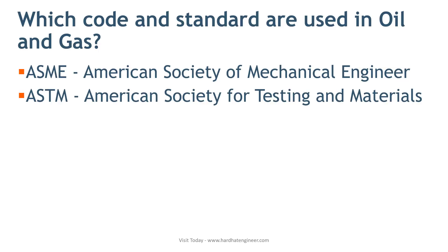ASME has published a total of 15 sections. Out of these, only Section 1, Section 2, and Section 3 are used very frequently in the process industry. Within these sections, there are different volumes that cover various materials. For example, Section 1 has 8 volumes, Section 2 has 5 volumes, and Section 3 has 6 volumes.